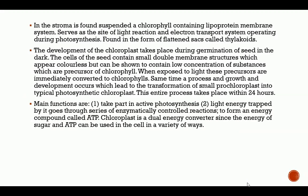In the stroma is found a chlorophyll-containing lipoprotein membrane system that serves as the site of light reactions and the electron transport system during photosynthesis. It is found in the form of flattened sacs called thylakoids. The development of the chloroplast takes place during germination of the seed. The cells of the seed contain small double-membrane structures which appear colorless but contain low concentrations of substances that are precursors of chlorophyll. When exposed to light, these precursors are immediately converted to chlorophyll.